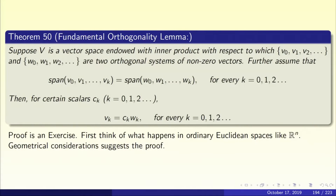Let us look at the proof of this. The proof is really an exercise. Rather than trying to do it algebraically, try to do it geometrically. In fact, if you think geometrically, you will quickly realize that this theorem is self-evident — there is really nothing to prove. Let us examine the hypothesis very carefully, for every k equal to 0, 1, 2, 3, etc.